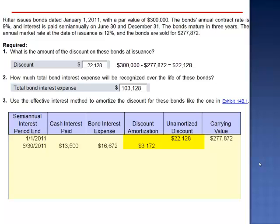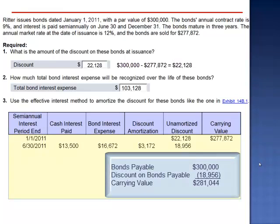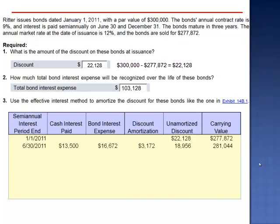$22,128 minus $3,172 is $18,956. The amount of the amortization is the movement toward the face value — this bond will move toward the face value by $3,172. Since the unamortized discount is now $18,956, the carrying value is $300,000 minus $18,956, which is $281,044. And it stands to reason that if your carrying value — your debt balance — is higher, the amount of your interest is also going to be higher.